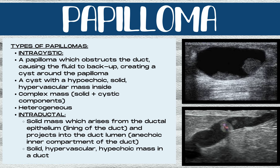An intraductal papilloma is a solid mass which arises from the ductal epithelium. This is the lining of that milk duct, and it projects into the duct lumen — the anechoic inner compartment of the milk duct. So you're going to see a milk duct with a solid, hypervascular, hypoechoic mass within the milk duct.